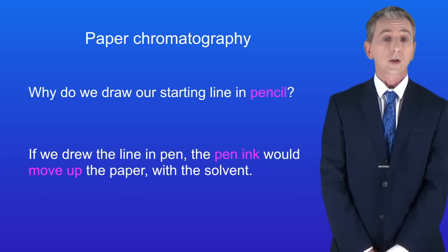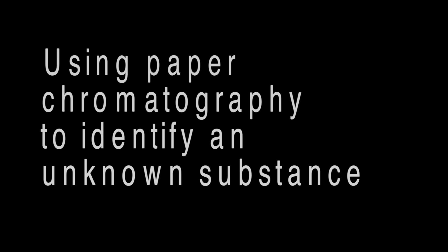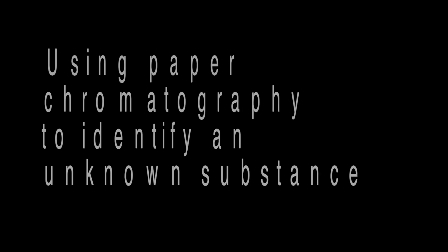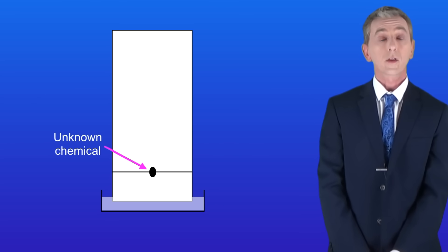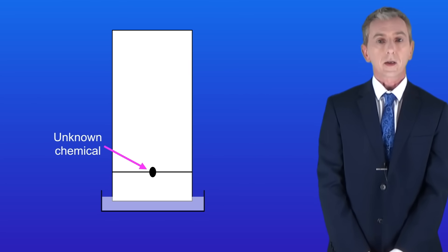Coming up we're going to see how we can use paper chromatography to identify an unknown substance. One of the real benefits of chromatography is that we can use it to identify an unknown substance. I've got here a chemical. I don't know what this chemical is and I'm going to find out using paper chromatography.